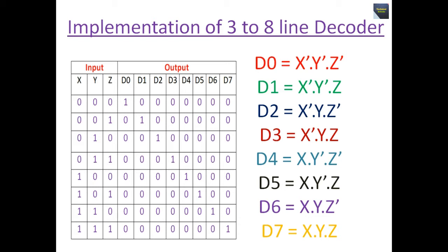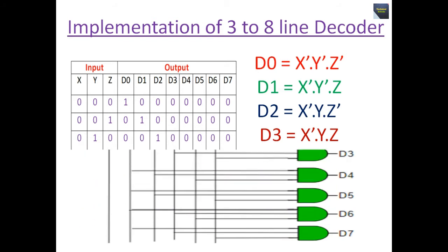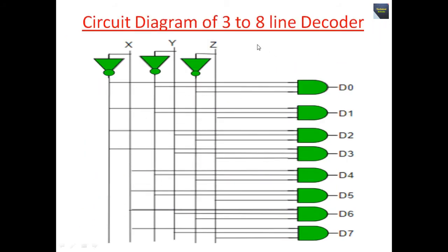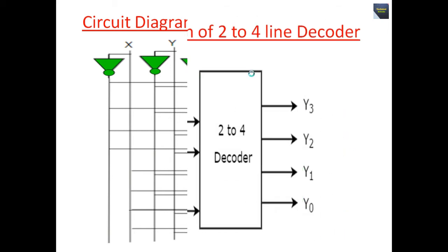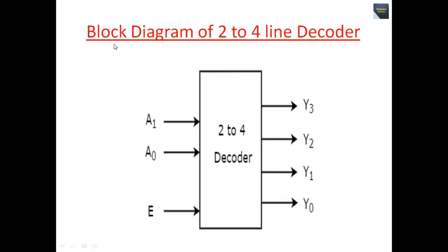This is the circuit diagram of the 3-to-8 line decoder, where three inputs X, Y, Z and eight outputs D0 to D7 are present. The circuit is built using AND gates and NOT gates. Now let's talk about the block diagram of a 2-to-4 line decoder.